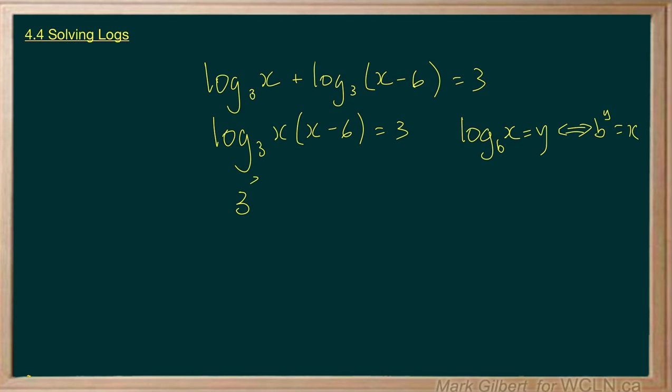So we get 3 cubed is equal to x times x minus 6. So that gives us 27 is equal to x squared minus 6x.